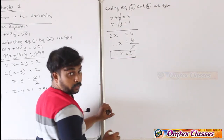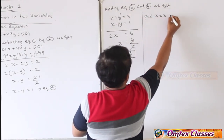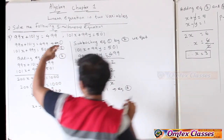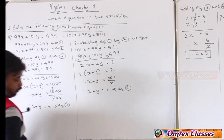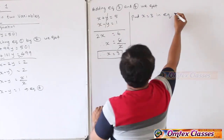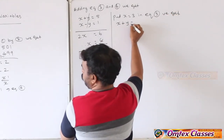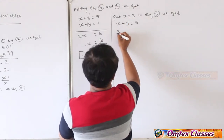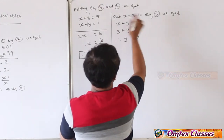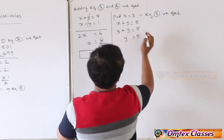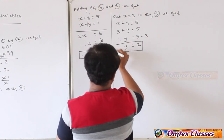x का answer 3 मिल गया। अब y निकालने के लिए equation 3 में substitute करेंगे: 3 plus y equal to 5, therefore y equal to 5 minus 3, y equal to 2.